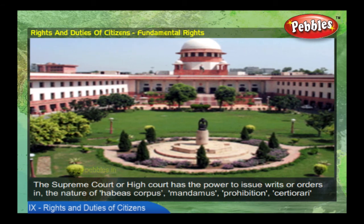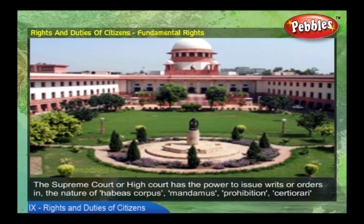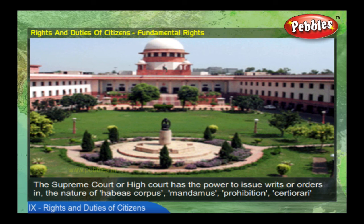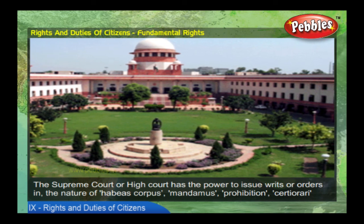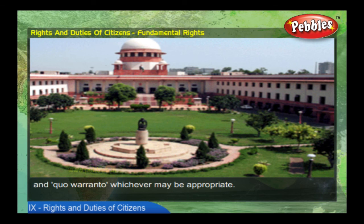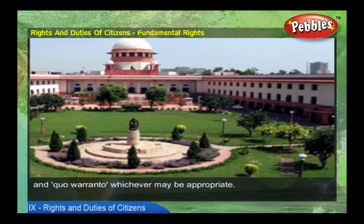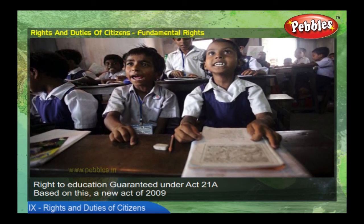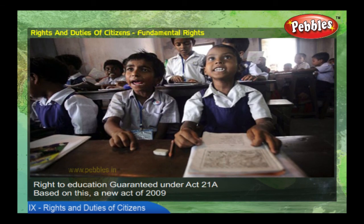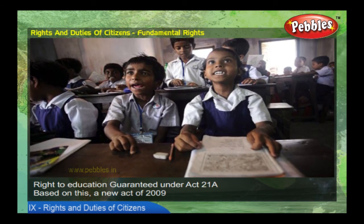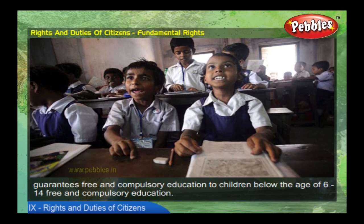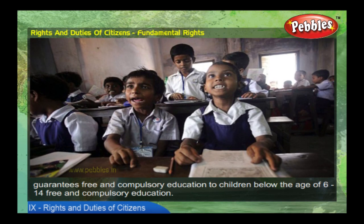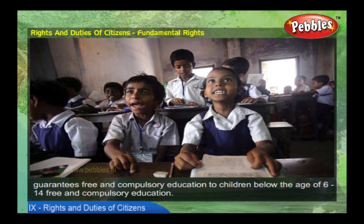The Supreme Court or High Court has the power to issue writs or orders in the nature of habeas corpus, mandamus, prohibition, certiorari, and quo warranto, whichever may be appropriate. Right to education guaranteed under Article 21A: based on this, a new Act of 2009 guarantees free and compulsory education to children from the age of 6 to 14.